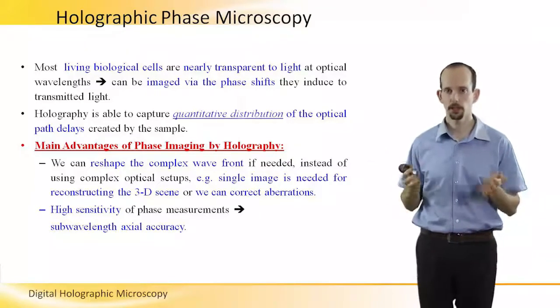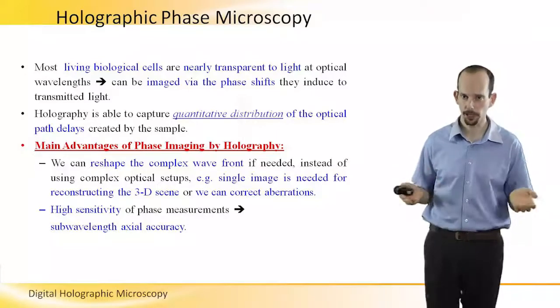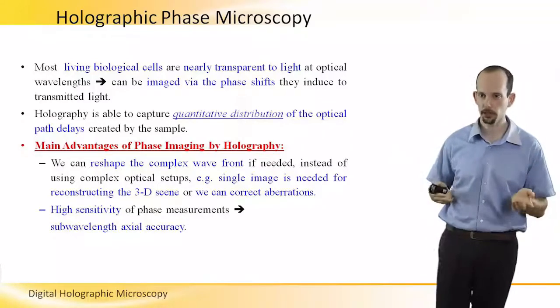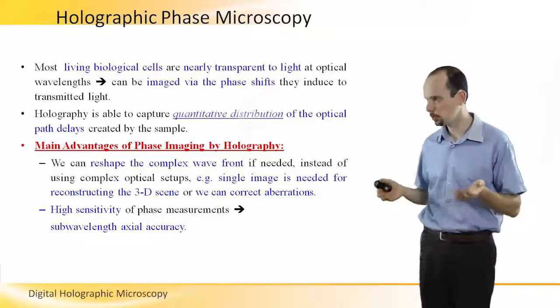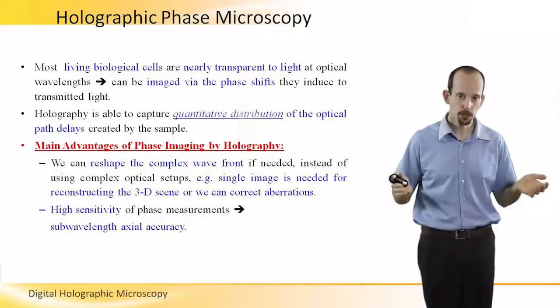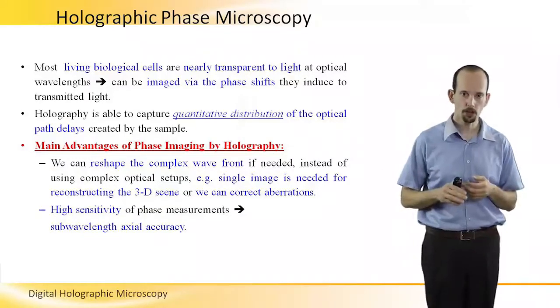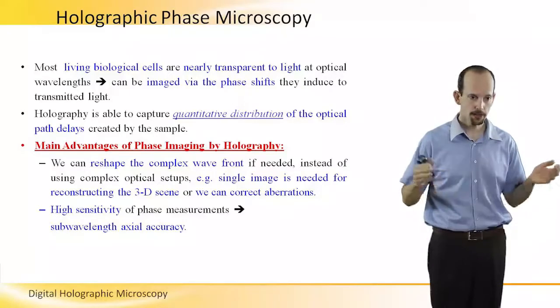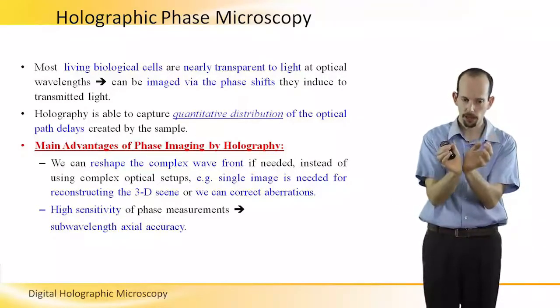Most living specimens in vitro or living biological cells are nearly transparent to light in the optical wavelengths, which actually means that if we image their intensity, their phase shifts are lost. And therefore, we just see the edges of the cells.